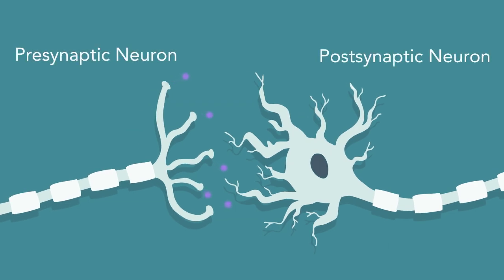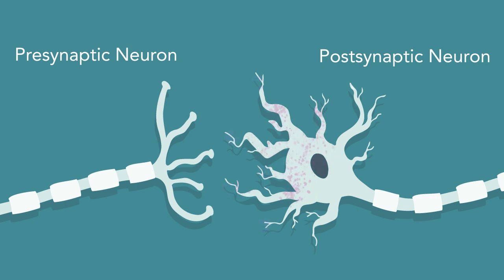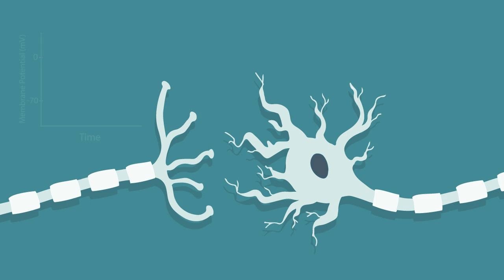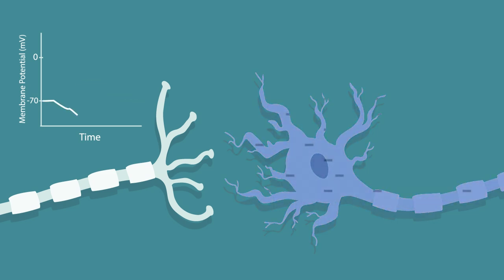Now we will explain postsynaptic potentials. When the axon of the presynaptic neuron releases neurotransmitters into the synapse, the neurotransmitters bind to the postsynaptic receptors on the next cell's dendrites. Like in the action potential, this binding triggers an increase in the permeability of the cell membrane, which changes the net charge at the reception site, and these changes are postsynaptic potentials. However, unlike action potentials, postsynaptic potentials can be depolarizing and excitatory, or hyperpolarizing and inhibitory.